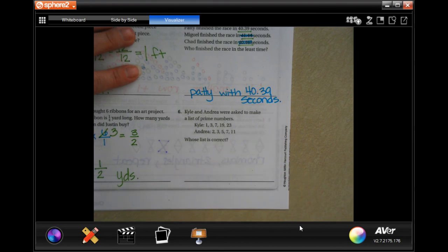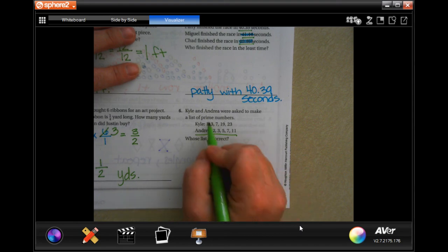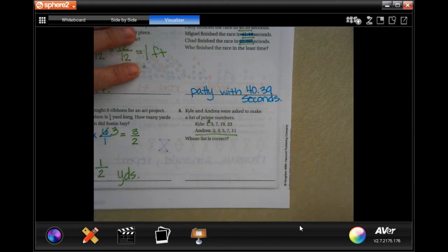Well, let's see, so, I'm gonna say Andrea's list is right because Kyle didn't include a 2. A 2 is a prime number. So, Andrea is correct.